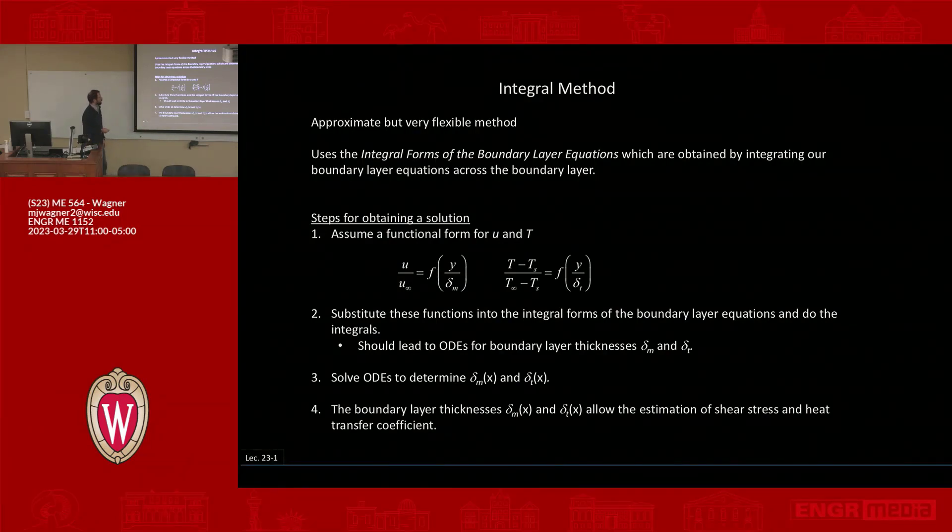And specifically we're saying it's some function of y over delta m, so it's a normalized position with respect to the boundary layer thickness. So this could be something like, I'm going to say u over u infinity is a plus b y, right? That's a linear relationship. So my equation would be a linear function of y. I could make it a quadratic, I could make it a cubic, I could make it anything.